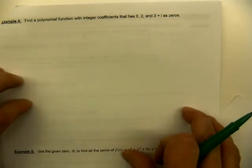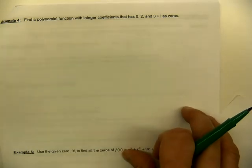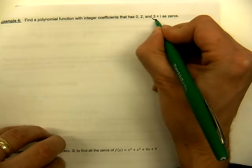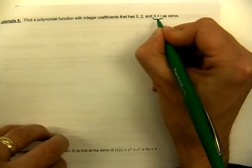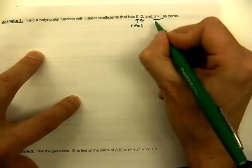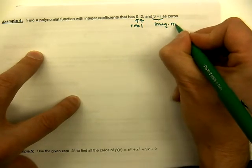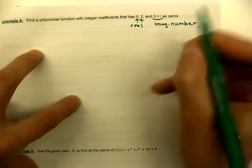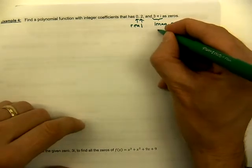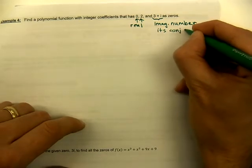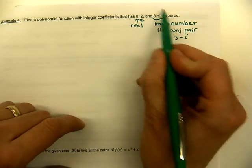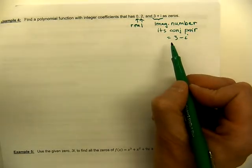In example four, find a polynomial function with integer coefficients that has zeros of zero, two, and three plus i. Notice three plus i is a complex number. We have two real solutions (zero and two) and one complex solution. But complex zeros always come in pairs, so they only gave us one — we must supply its conjugate pair: three minus i. That gives us four solutions total, so it will be a fourth degree polynomial.